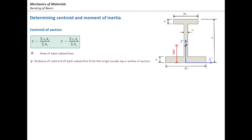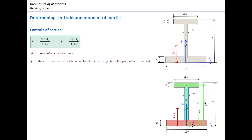In order to determine the section properties for a combined section consisting of a few simple shapes connected together, we divide the section into simpler parts, determine the area and centroid for each part, and then use the centroid equation to find the location of the centroid about the x and y-axis. Let's solve a problem numerically to understand how to apply the centroid equation for a combined shape.